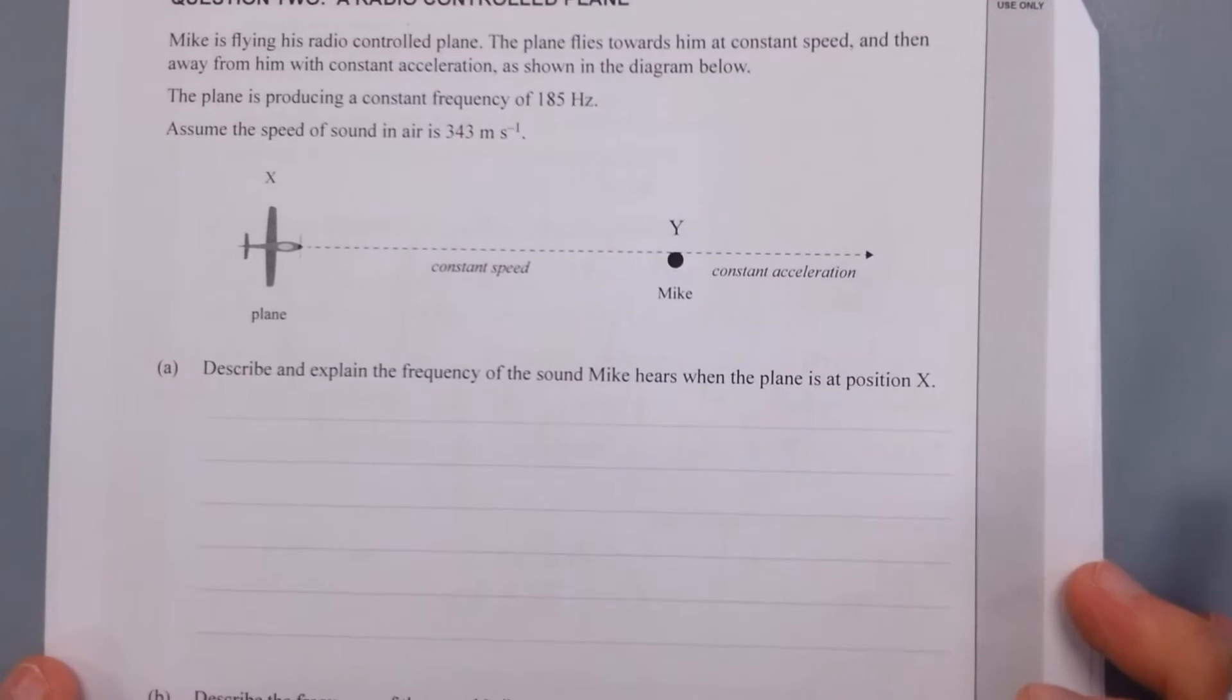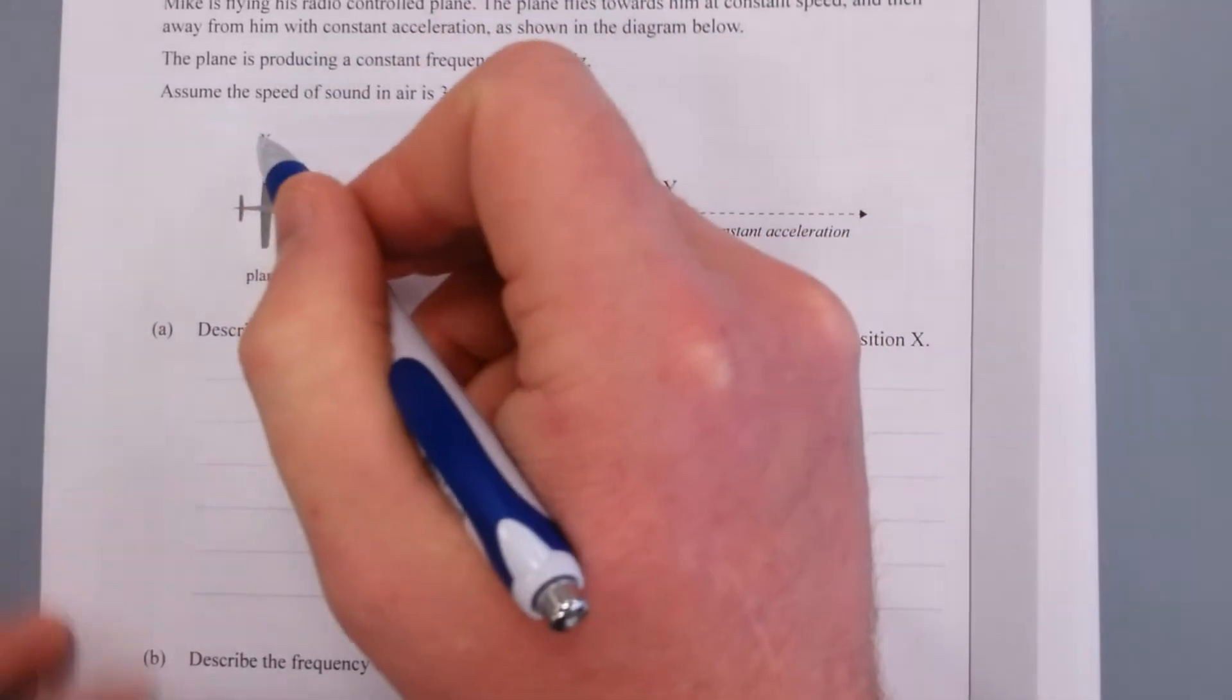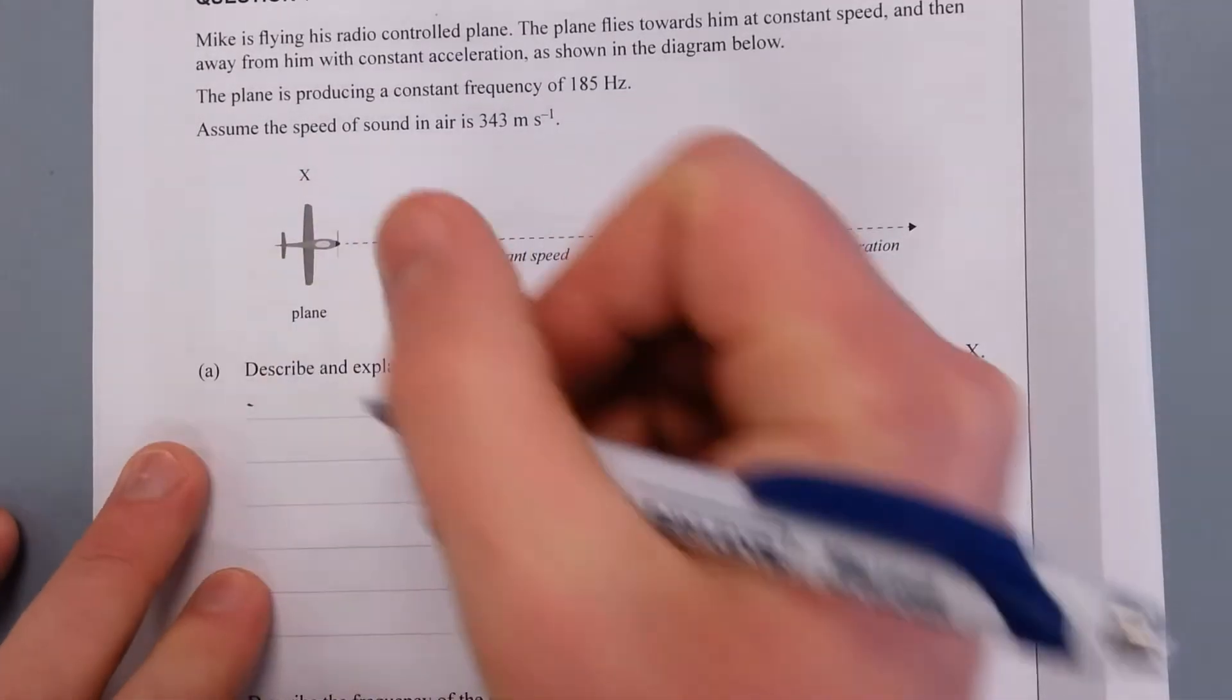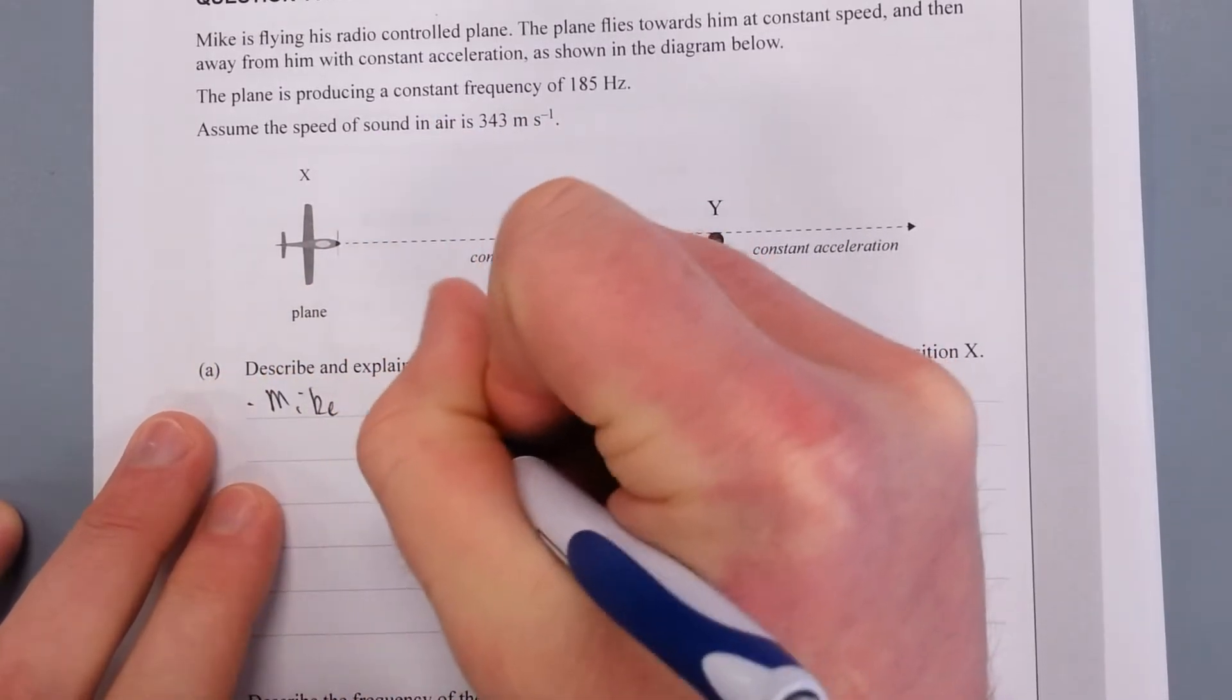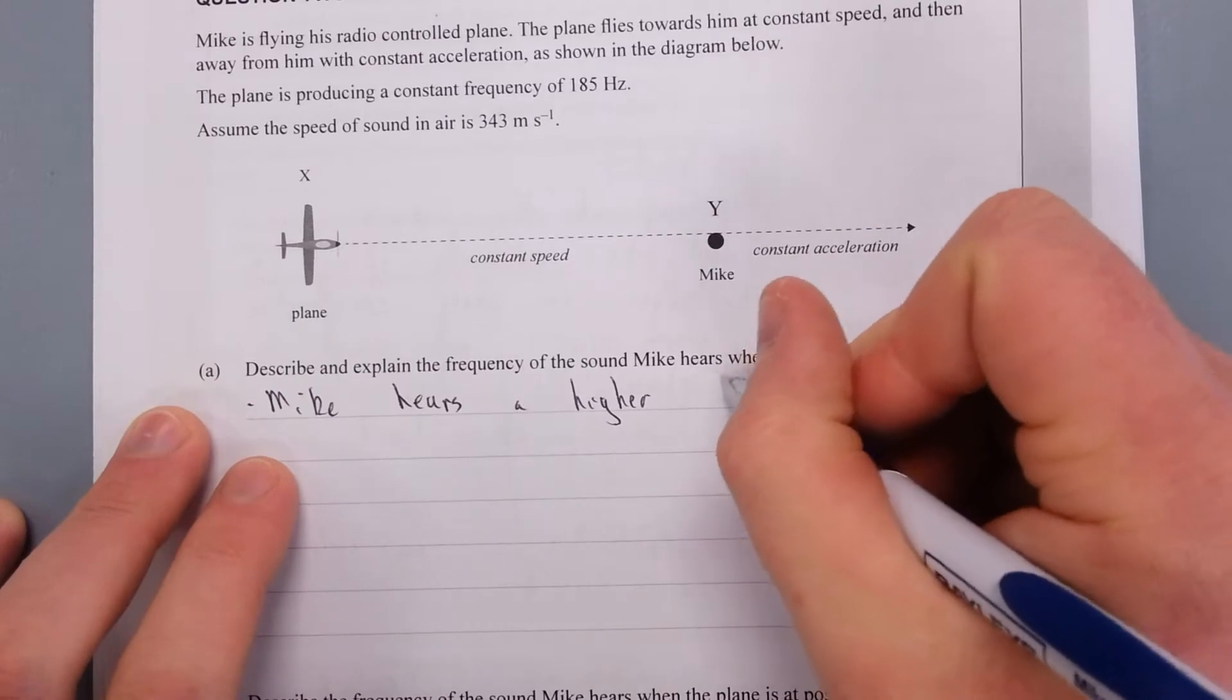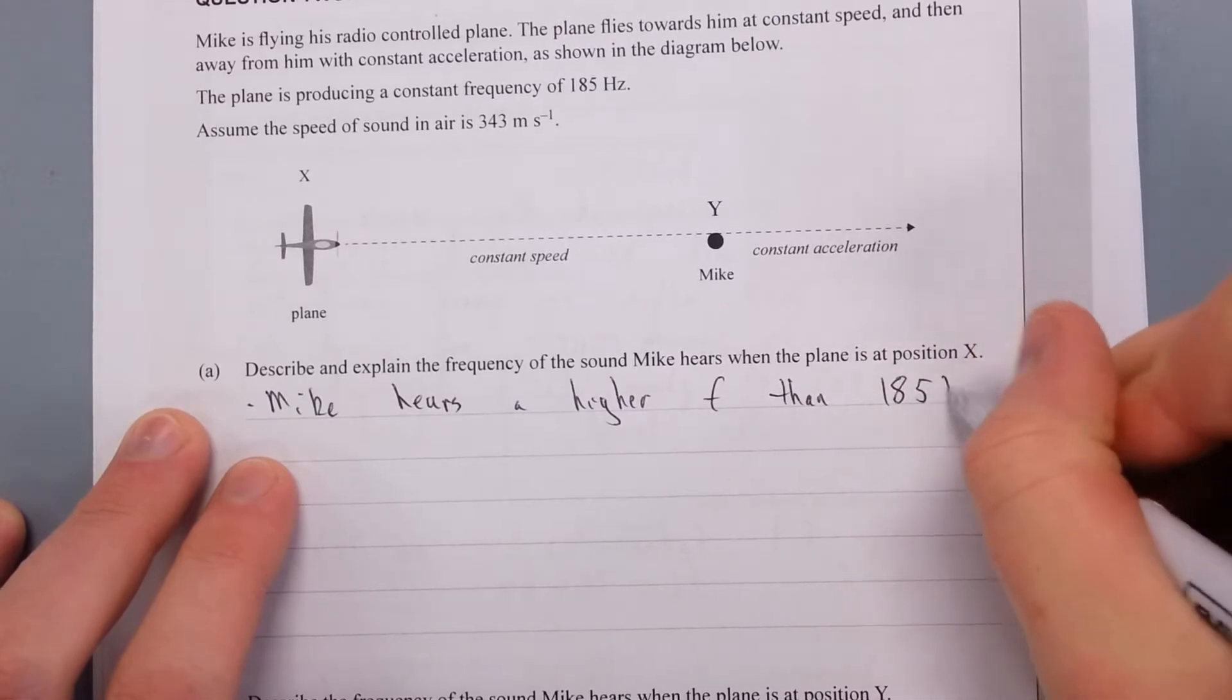Describe and explain the frequency of sound Mike hears when the plane is at position X. So position X is here. So when the plane is here, what does Mike hear? Plane is going to have constant speed. So let's just say what he's going to hear. He's going to hear higher frequencies. So Mike hears a higher frequency. Higher F than 185. I should have really written frequency, but whatever.